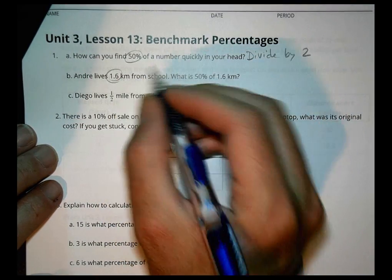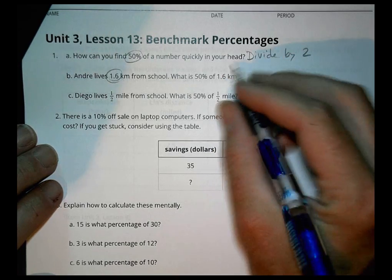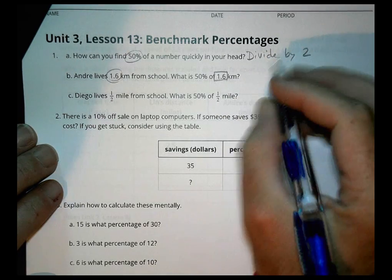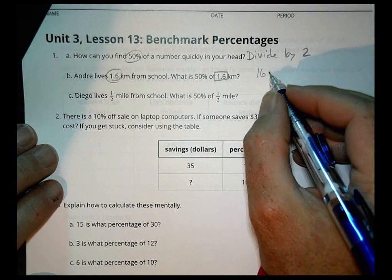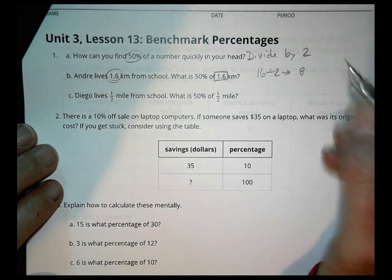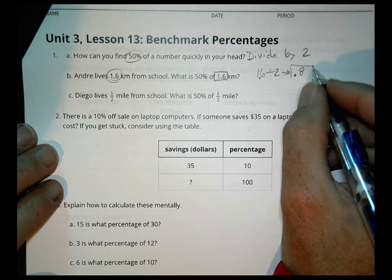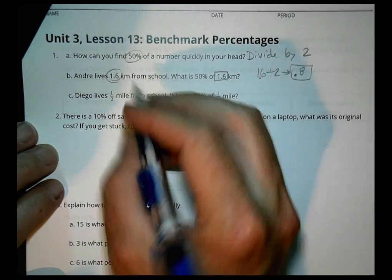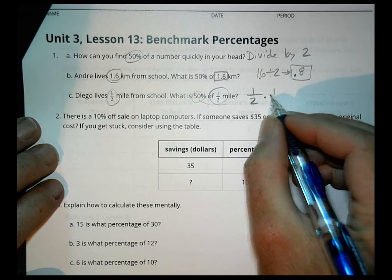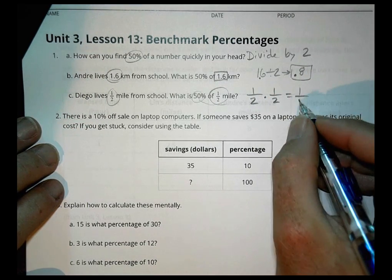Andre lives 1.6 kilometers from school. What is 50% of 1.6? Now you might have looked here and said, well, it's a decimal. What am I going to do? Don't worry so much about the decimal part. Think if the decimal wasn't there, it's like the number 16. What's half of 16? Half of 16 would be 8. Now I know there's still a decimal there, so what I end up with then is 0.8. Diego lives half a mile from school. What is 50% of a half a mile? We're taking a half of a mile and we are dividing it by 2. A half times a half is actually 1 fourth.